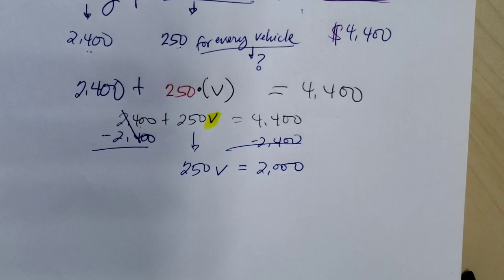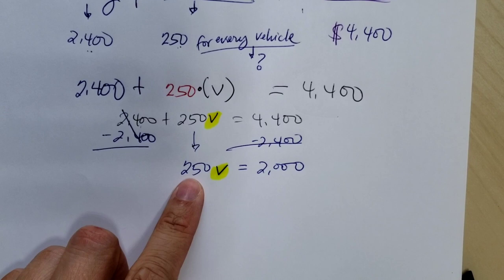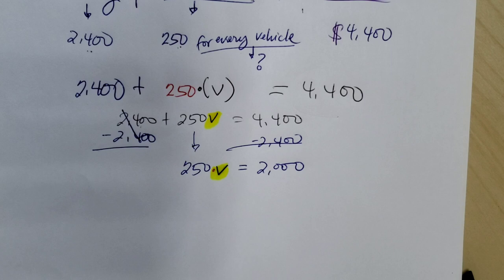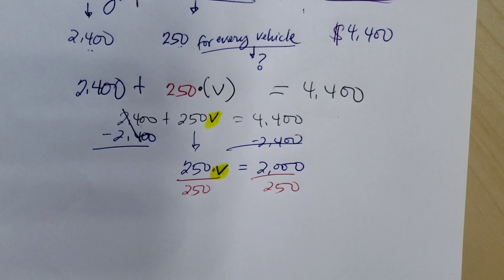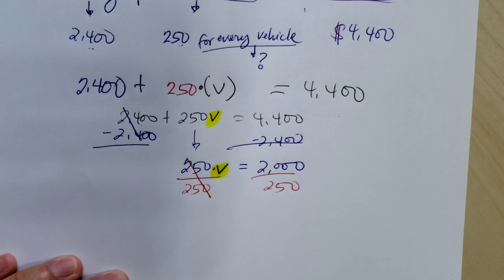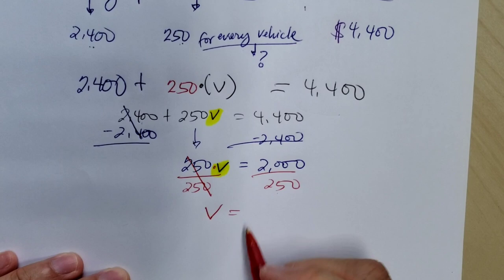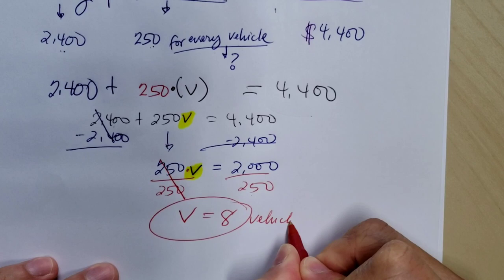Now step three would be to isolate v. That means get rid of 250. Now remember this is being multiplied, so let's do the inverse operation. Undoing multiplication means we're doing the opposite operation which is to divide. So we're going to divide by its coefficient, 250, divided by 250, because of the property of equality of division. Whatever you do on one side you do on the other. That's equal to one, or just v. That gives us 2,000 divided by 250 equals 8. So he or she needs to sell 8 vehicles.